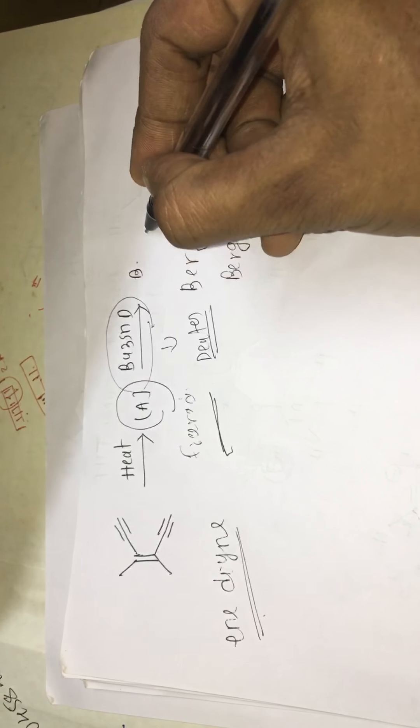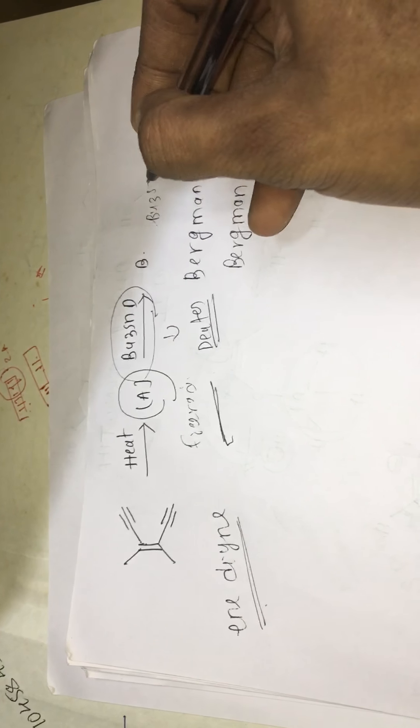So here it can be either hydrogen or deuterium. If you take Bu3SnH, this is the source for hydrogen atom. So we will see the mechanism here.